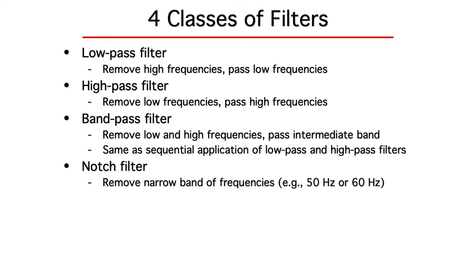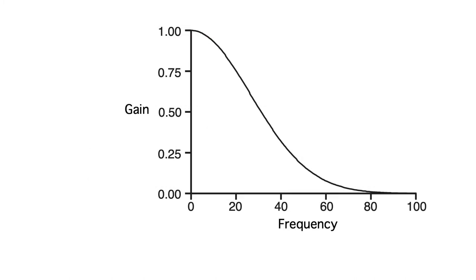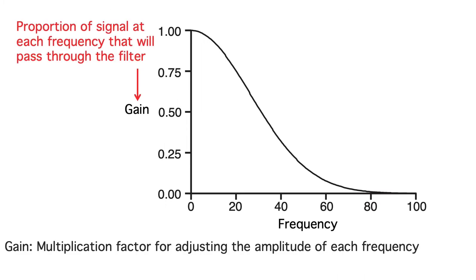Filters are often described in the frequency domain by showing the frequency response function. The x-axis is frequency, and the y-axis is gain, which goes from 0 to 1. The gain indicates the proportion of the signal that the filter passes for a given frequency.